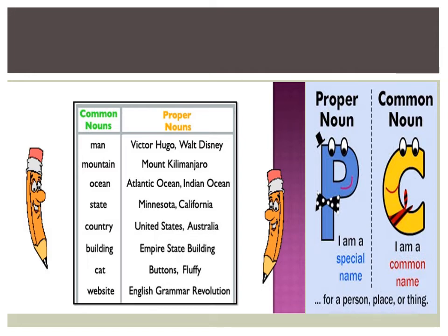'Country' is a common noun whereas India, United States, and Australia are proper nouns. 'Building' is a common noun whereas the name of a specific building is a proper noun — for example, Empire State Building. 'Cat' is a common noun whereas if you give a specific name to your cat, such as Buttons or Fluffy, that is a proper noun. A 'website' is a common noun whereas the name of a particular website, for example English Grammar Revolution, is a proper noun.